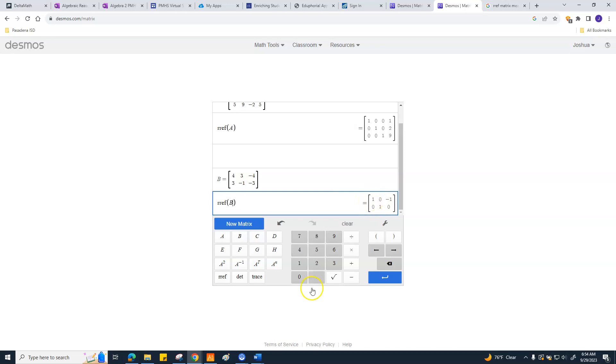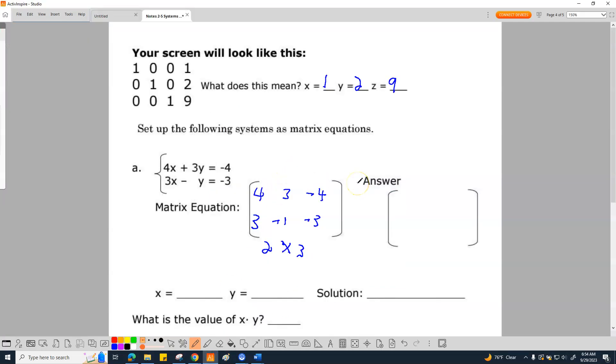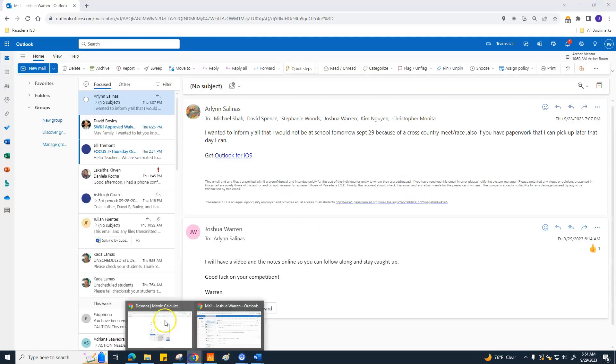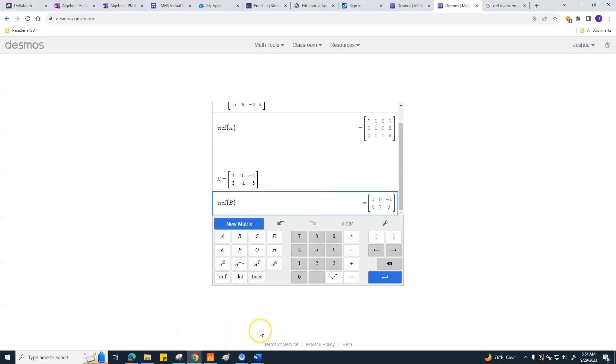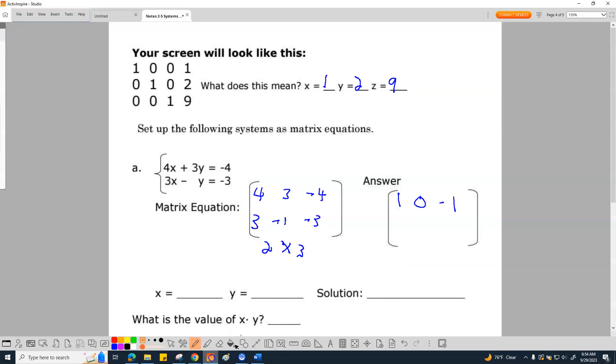Check it out. We have ourselves the answer. So I'm going to record that answer up on the notes. So this was 1, 0, negative 1. And then the other line was 0, 1, 0.